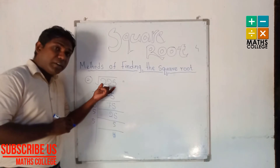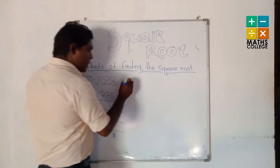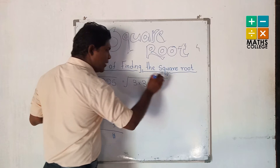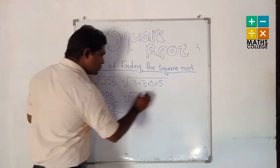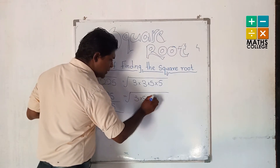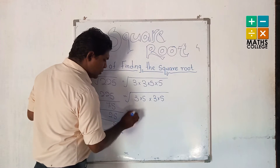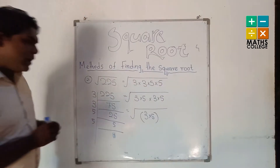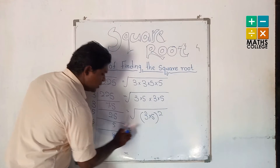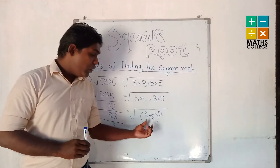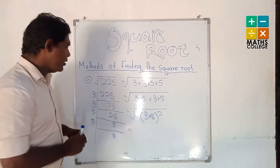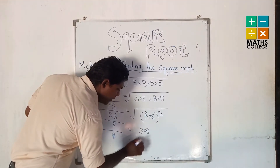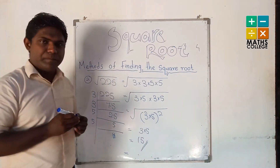Now we can write 225 as 3 × 3 × 5 × 5 under the square root. We pair them as (3 × 5) and (3 × 5), giving us (3 × 5) squared. So the square root of 225 is 3 × 5 = 15.